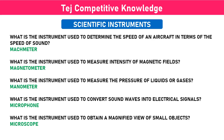What is the instrument used to determine the speed of an aircraft in terms of the speed of sound? Magnetometer. What is the instrument used to measure intensity of magnetic fields? Magnetometer. What is the instrument used to measure the pressure of liquids or gases? Manometer.